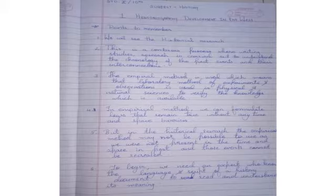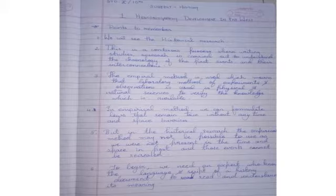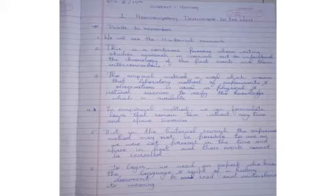The empirical method — that is, the laboratory method of experiments and observations — is used in physical and natural sciences to verify the available knowledge. In empirical method, we can formulate laws that remain true without any time and space barriers.